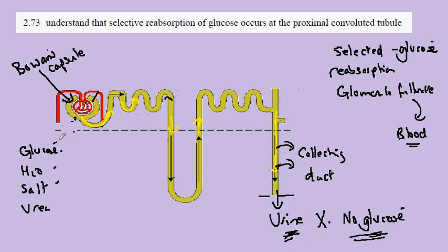And yet glucose is actually in the fluid at this point. The reason for this is that in the first convoluted tubule - remember, this is known as the proximal convoluted tubule.